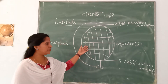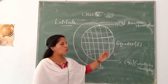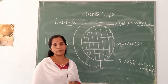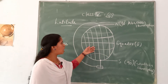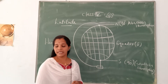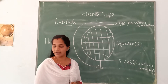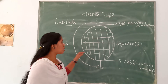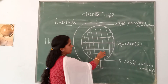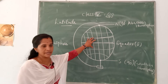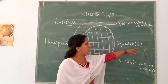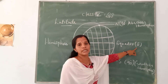Today we are going to discuss what is equator. What is the meaning of equator? Halfway between the poles is an imaginary line called the equator. The value of the equator is 0 degrees.